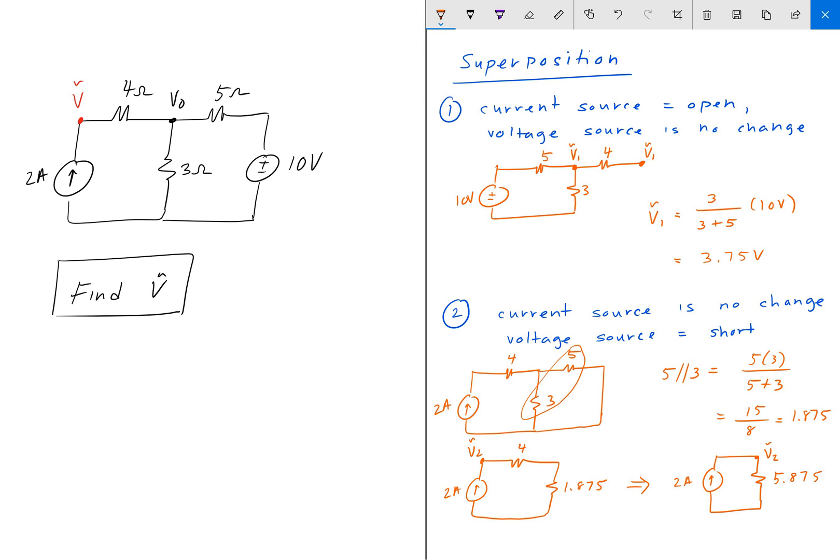And we can solve that using Ohm's law. So 2 amps times the 5.875 gives us that voltage there. And that gives us that V tilde 2 is 2 amps times 5.875, which is 11.75 volts.